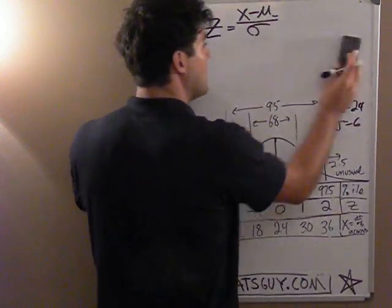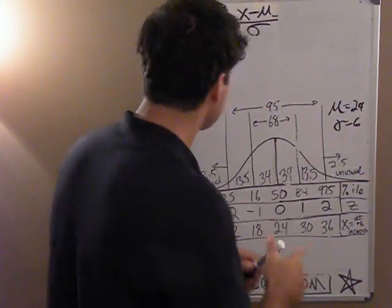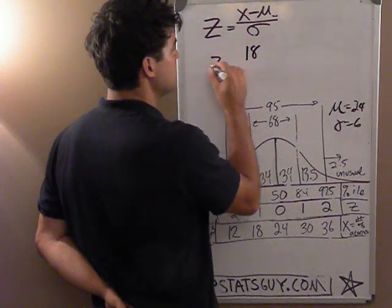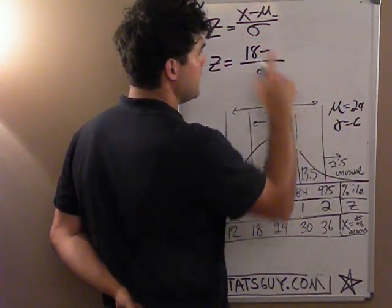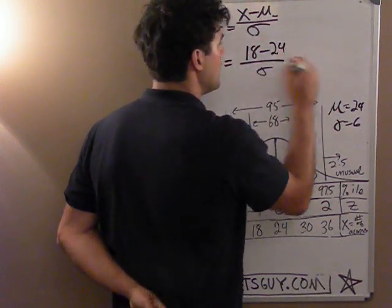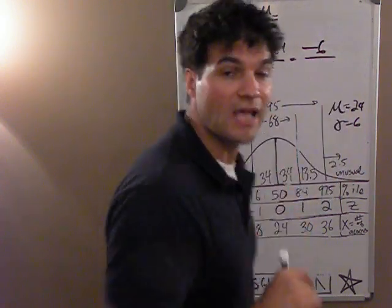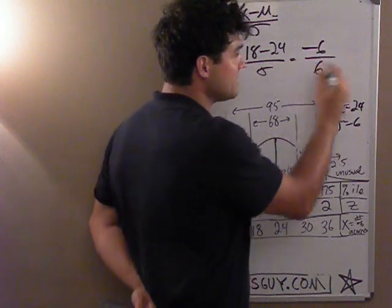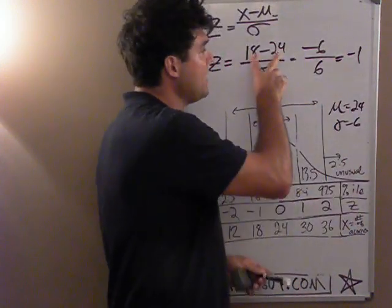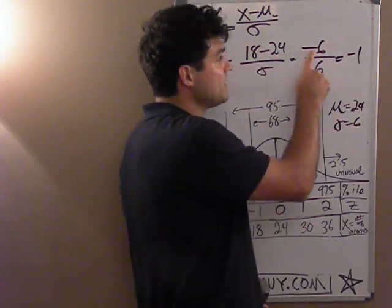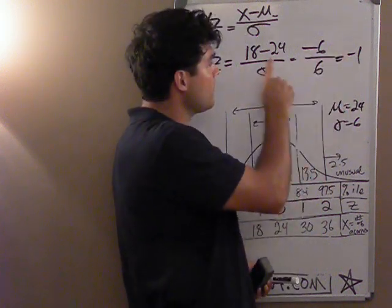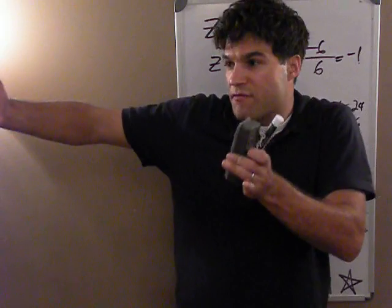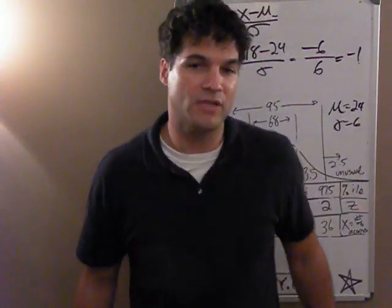Let's look at another calculation so you can see how the formula makes sense. Say a squirrel could fit 18 acorns. Using the formula: 18 minus the mean of 24 is negative 6. So it's 6 acorns below the mean. But I don't want to know acorns — I want how many standard deviations that is, meaning how many sixes. That's 1. When I divide by the standard deviation of 6, it tells me negative 6 is just one standard deviation below the mean. So 18 is one standard deviation below the mean. That's the z-score formula.